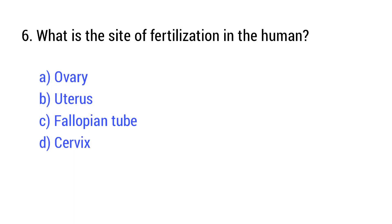Question number 6. What is the site of fertilization in humans? The right answer is option C: Fallopian tube.